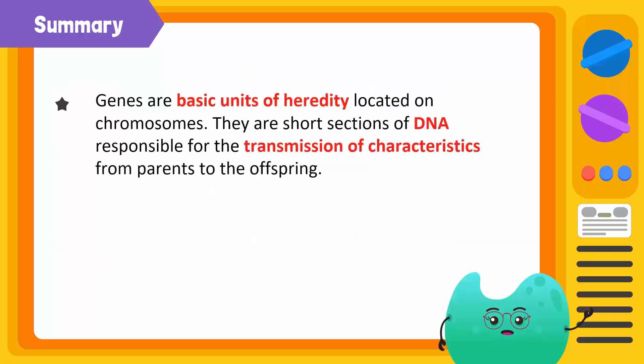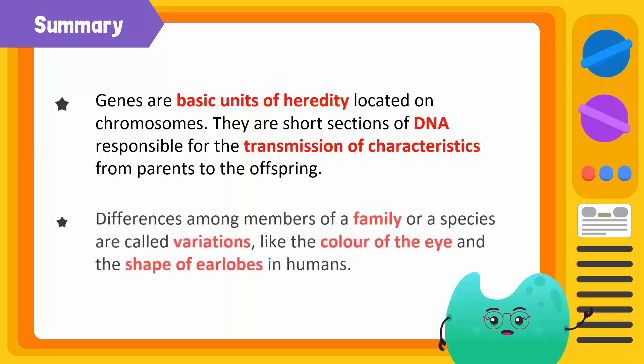Genes are the basic units of heredity located on chromosomes. They are short sections of DNA responsible for the transmission of characteristics from parents to offspring. Differences among members of a family or a species are called variations, like the color of the eye and the shape of earlobes in humans.